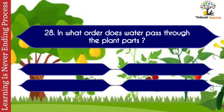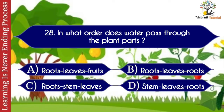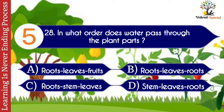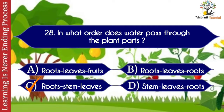Question number twenty-eight: in what order does water pass through the plant parts? Options: A. Roots, Leaves, Fruits. B. Roots, Leaves, Roots. C. Roots, Stem, Leaves. D. Stem, Leaves, Roots. The correct answer is C. Roots, Stem, Leaves.